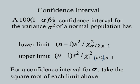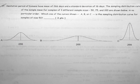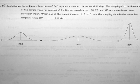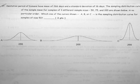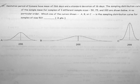Before we end, let us revisit the problem of identifying which of three curves represents the sampling distribution of the sample mean for sample sizes 50, 75, and 100. The answer: the one with the largest spread corresponds to sample size 50 — that is curve B — because the spread decreases as sample size increases. The curve corresponding to sample size 100 is C, the most concentrated one.